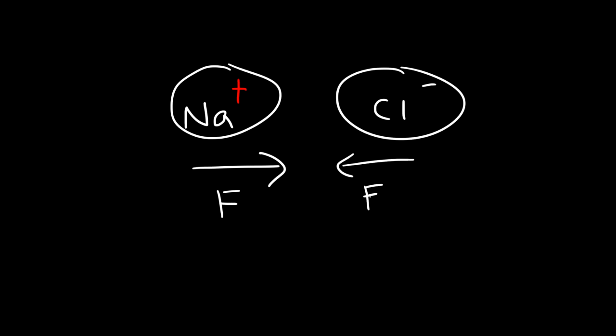Now what about a dipole? What exactly is a dipole, and how is it different from an ion? An ion is a single particle with a net charge — it could be a net positive charge or a net negative charge. An ion is not neutral.